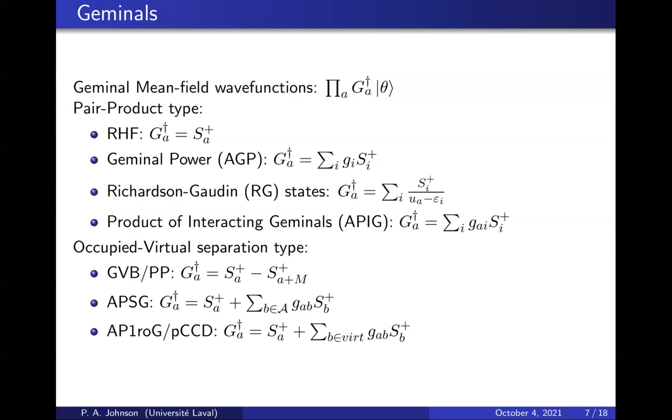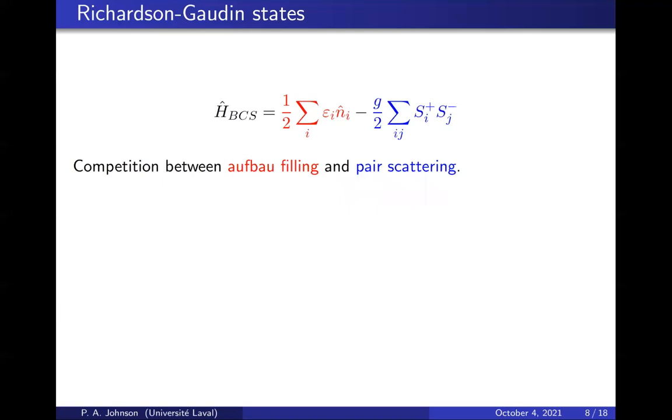So we're going to think about RG states. They are eigenvectors of a specific Hamiltonian that is of a BCS type where the interaction is a constant. There's competition between filling up of the lowest sites and scattering between each of the sites. So you can show very easily in a few lines that if you build a state that is a product of RG pairs, which is this ket here, and you act with this Hamiltonian on that state, you will get one term that is proportional to that state and a lot of linearly independent garbage.